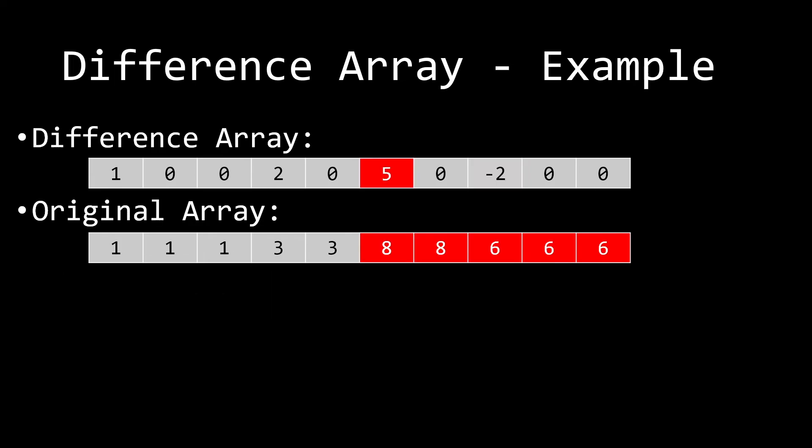If I add a 5 at some index in the difference array, everything from that point onwards in the original array is affected. If I then add a negative 5 at a later index, it cancels it out. That's the key idea of the difference array — adding c at index L and subtracting c at index R plus 1 to confine the change to the range L through R.